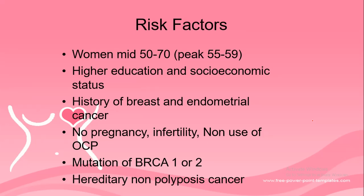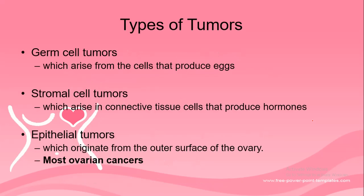Additional risk factors include hereditary non-polyposis cancer, which is seen in colorectal cancer. There are three types of tumors in ovarian cancer: germ cell tumors, stromal cell tumors, and epithelial tumors. Germ cell tumors arise from cells that produce eggs, stromal cell tumors arise from connective tissue cells that produce hormones, and epithelial tumors originate from the outer surface of the ovary. Epithelial tumors are the most common.